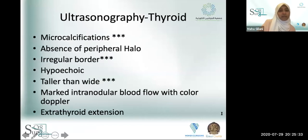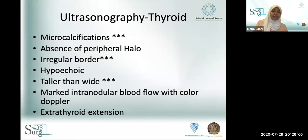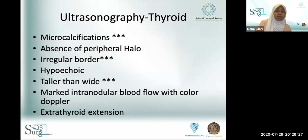Ultrasonography of the thyroid has come a very long way. Certain features indicate suspicion for malignancy. The most sensitive features — needing all three together — are microcalcifications, irregular border, and being taller than wide on transverse sonography. Other concerning features include absence of the peripheral halo, hypoechoic nodule, intranodular blood flow rather than peripheral, and evidence of extrathyroidal extension on ultrasound.